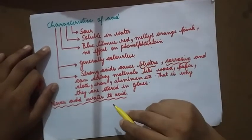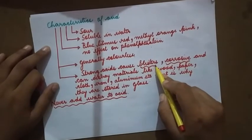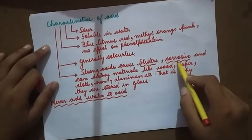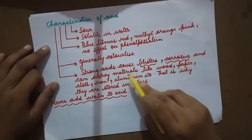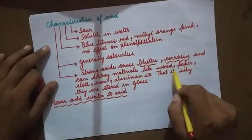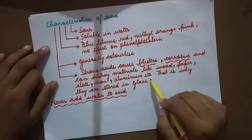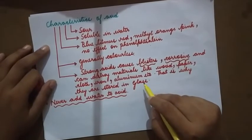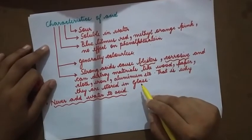Acids are generally colorless. Strong acids can cause blisters — swellings with pus. They are corrosive, meaning they can damage skin and destroy materials like wood, paper, cloth, iron, and aluminium. That is why they are stored in glass containers, since glass is not very reactive.